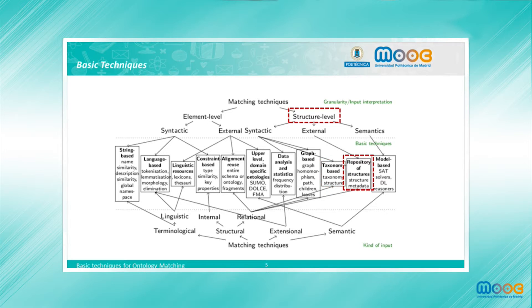Then there are other techniques like the repository of structures ones that use already pre-computed similarities between ontologies or ontology fragments. And finally, model-based techniques, which are those that try to exploit the purely semantic features of the ontology and typically use semantic reasoners to do so.